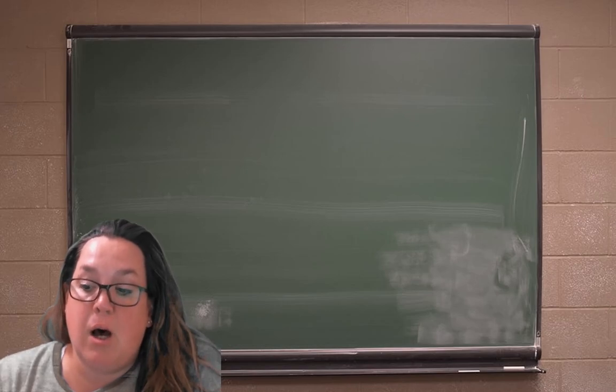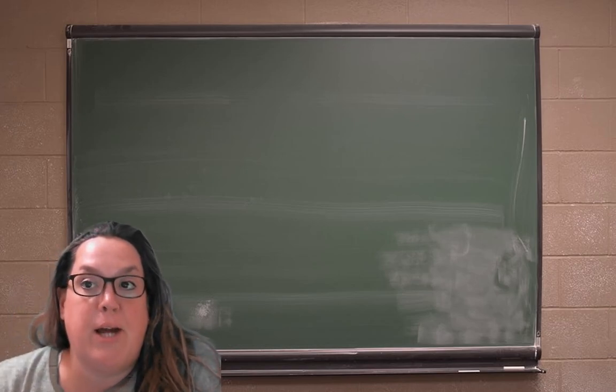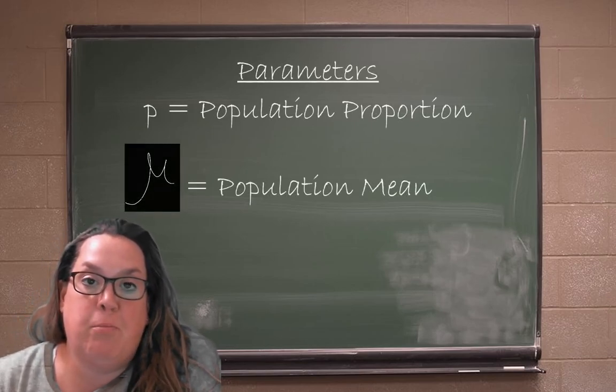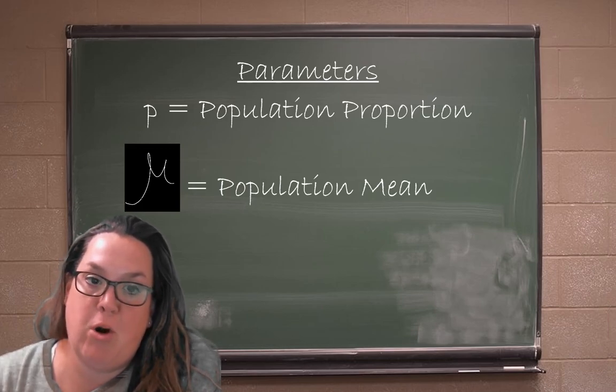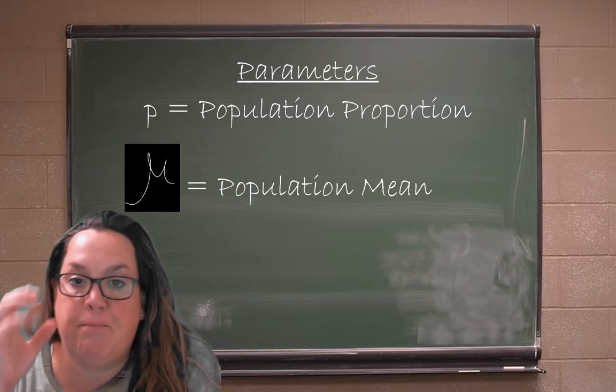We talked recently about different parameters that we're going to be trying to estimate, and that included p, which is the population proportion, and μ—excuse me—μ, which is the population mean.